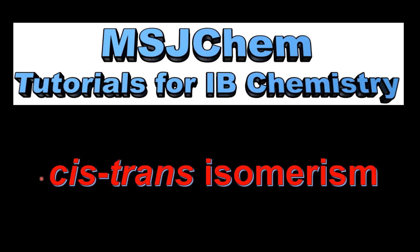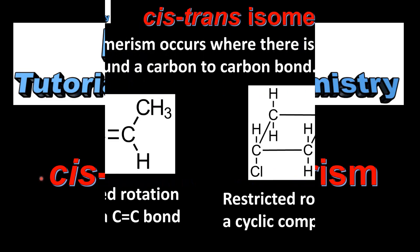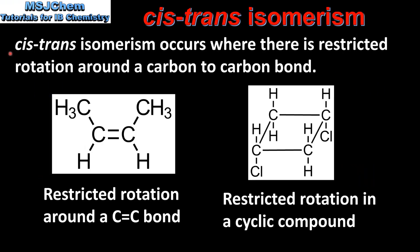This is MSJChem. In this video I'll be looking at cis-trans isomerism. Cis-trans isomerism occurs where there is restricted rotation around a carbon to carbon bond. This can be either restricted rotation around a carbon to carbon double bond, as we can see in the molecule on the left, or restricted rotation in a cyclic compound, as we can see in the molecule on the right. We'll start by looking at the restricted rotation around a carbon to carbon double bond.